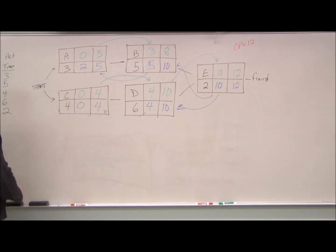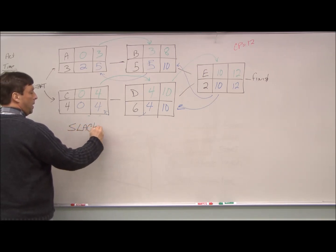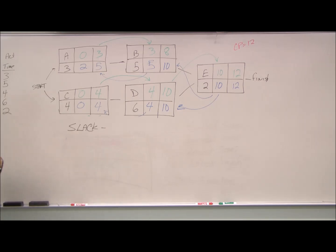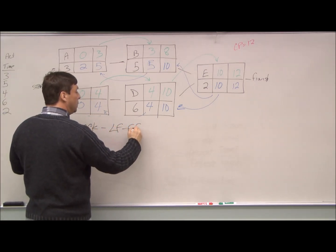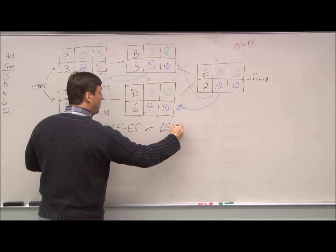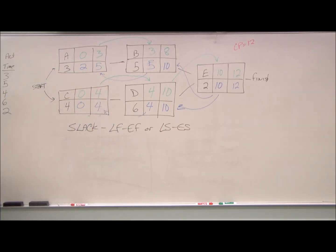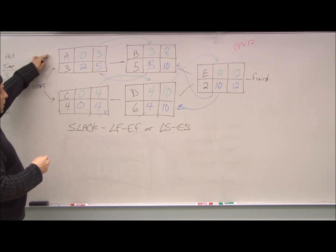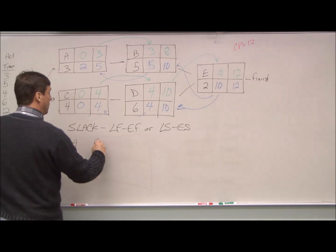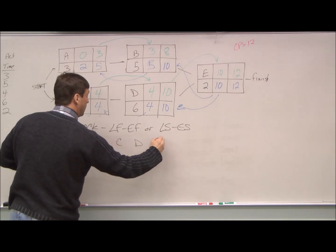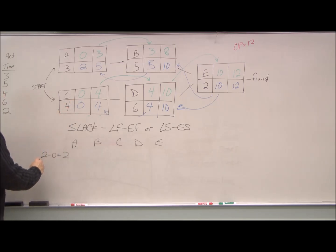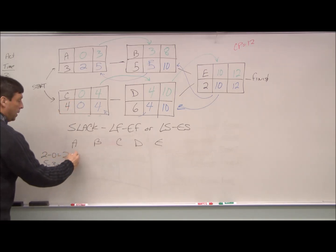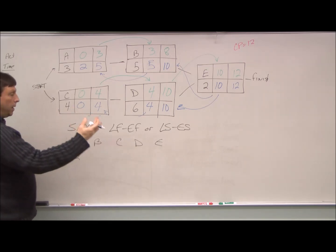The next thing we can calculate is slack. How much extra time do we have at any given operation? And slack can either be the latest finish minus the earliest finish, or the latest start minus the earliest start. You notice that the numbers will give you the same results. For example, for A, if we wanted to calculate the slack, we could do two minus zero, which is equal to two. Or we could do five minus three, which equals two. Again, just showing that it doesn't matter how we calculate it. Either way, the numbers are equivalent.